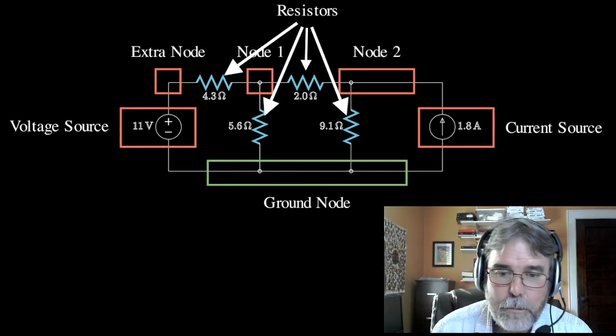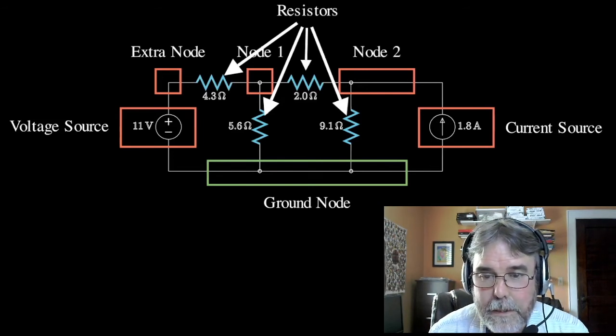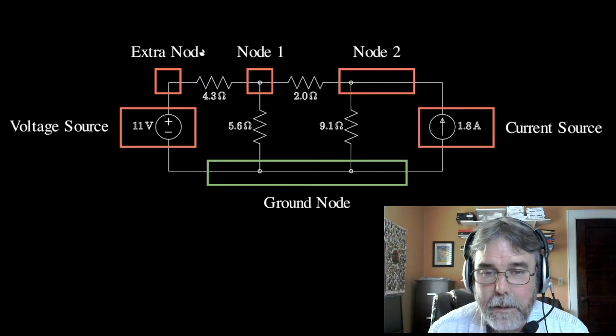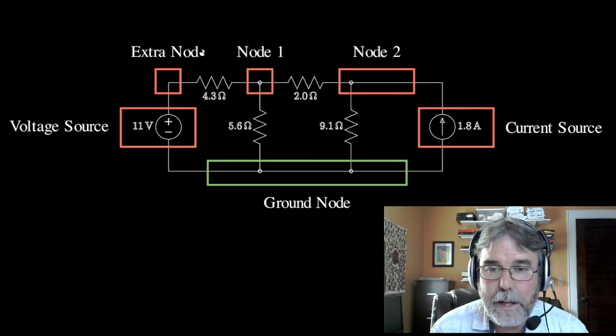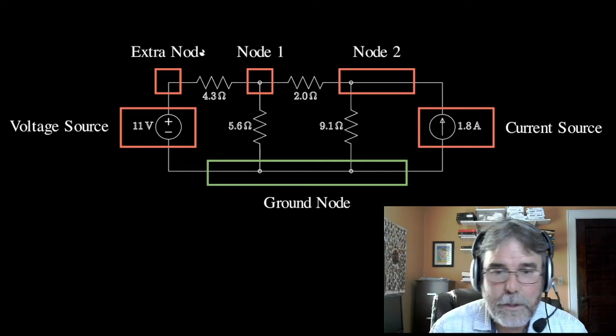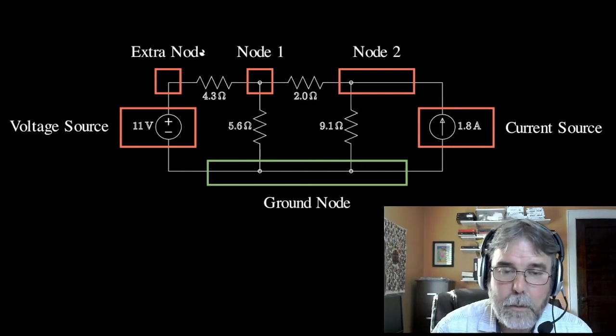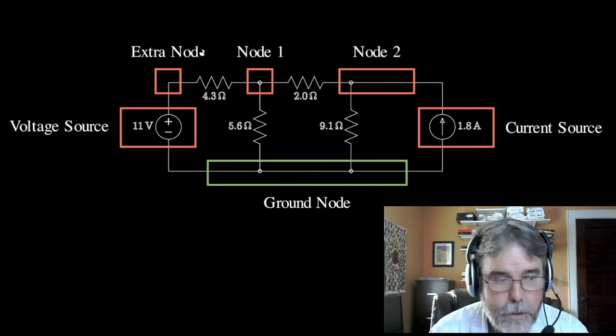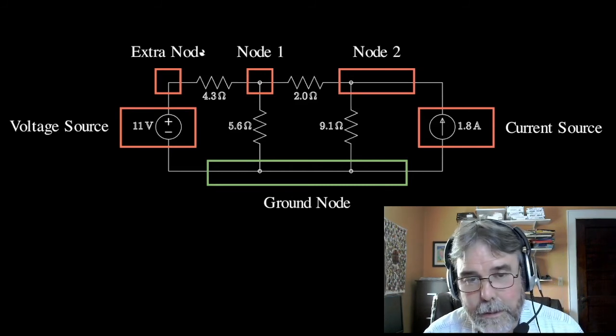Now there's all kinds of different problems you could face in dealing with a circuit like this. I could give you the voltages on multiple nodes and ask you for unknown resistances. I could give you the currents through a couple of branches and ask you for some unknown current. There's lots of different puzzles that you might have to solve in dealing with a circuit like this.